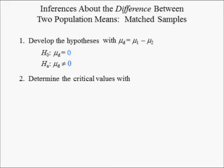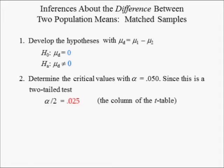In step 2, we determine the critical values. The critical values are found in the t-distribution table because the population standard deviations were not known. Since the significance level is 5%, alpha is equal to 0.05. Since this is a two-tailed test, alpha is divided by 2, which equals 0.025. The critical value is found in column 0.025 of the t-distribution table.